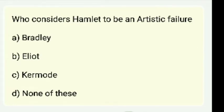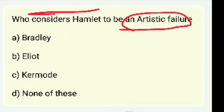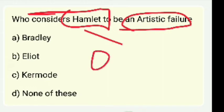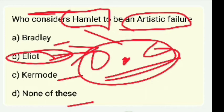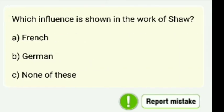Who considers Hamlet to be an artistic failure? We discussed this in a previous video on theories. The relation is with the objective correlative. Options are Bradley, T.S. Eliot, or none of these. The right answer is T.S. Eliot. T.S. Eliot gave the term 'objective correlative,' and according to him, Hamlet is an artistic failure. Can you write in the comment box why he said so?